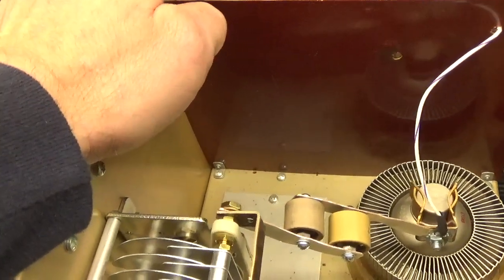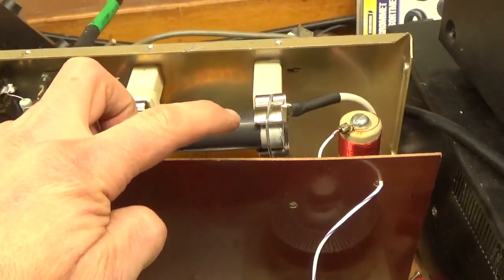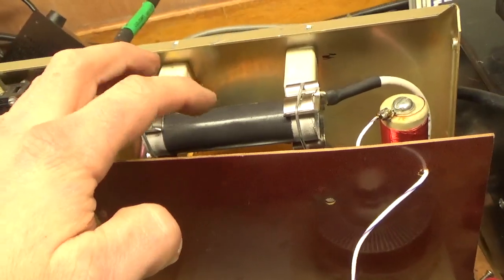These clips for the resistor have the retaining spring things. The retaining clip thingies. So, that resistor will never come out.